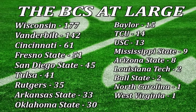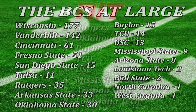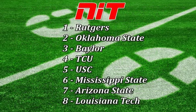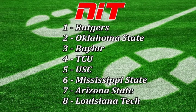Rutgers will obviously get the number one seed in the NIT because they got bumped down. Oklahoma State, Baylor, TCU, USC, Mississippi State, Arizona State, and Louisiana Tech based on tiebreakers will be your eight teams in the mini NIT tournament — kind of a secondary tournament to reward these teams for a great season and allow them to go to a bowl game and possibly make it all the way to Hawaii. You can see your NIT list on screen.